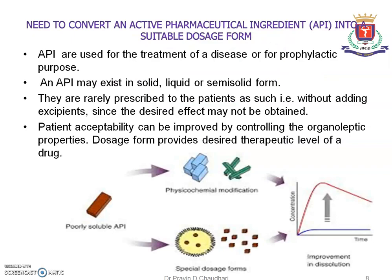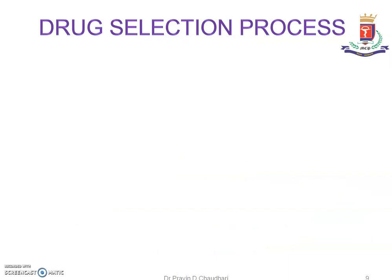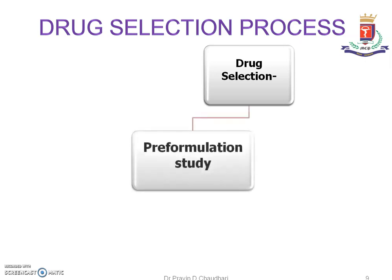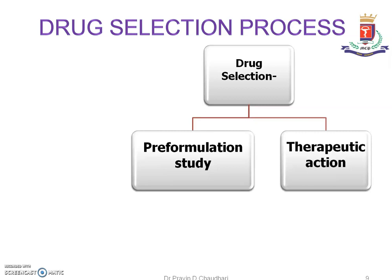Why do we need to convert the active medicament into a suitable dosage form? The active pharmaceutical ingredients are used for the treatment of disease or for prophylactic purposes. An active pharmaceutical ingredient may exist in solid, liquid or semi-solid form. They are rarely prescribed to patients as such — without adding excipients — since the desired effect may not be obtained. Patient acceptability can be improved by controlling the organoleptic properties. Dosage form provides the desired therapeutic level of a drug.